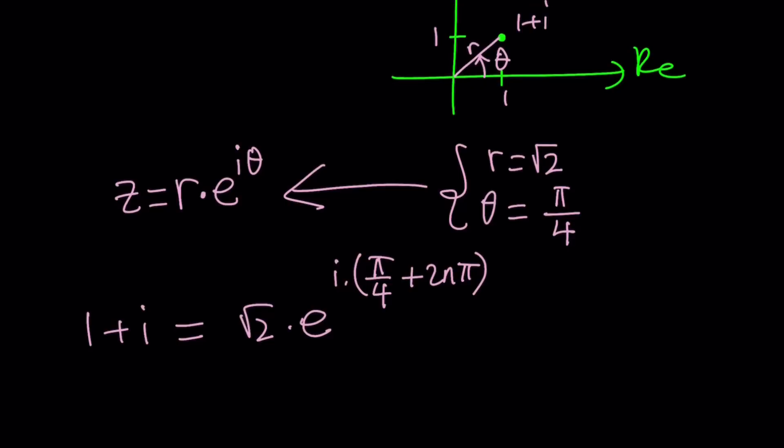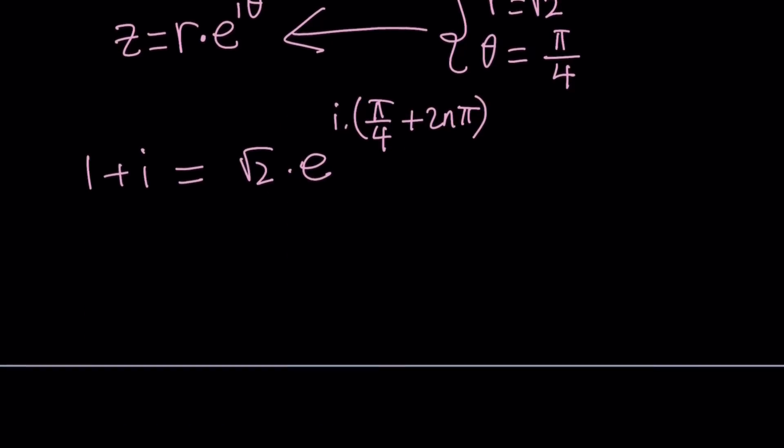Now we're going to raise this to the power x and then set it equal to i, but we also need to write i in polar form. i is just 0 + i, so its modulus r is going to be 1 and the angle is going to be π/2. So i can be written as e^(i(π/2 + 2kπ)). This time, I'm also adding the multiples of 2π, but using a different integer because n and k don't have to depend on each other.